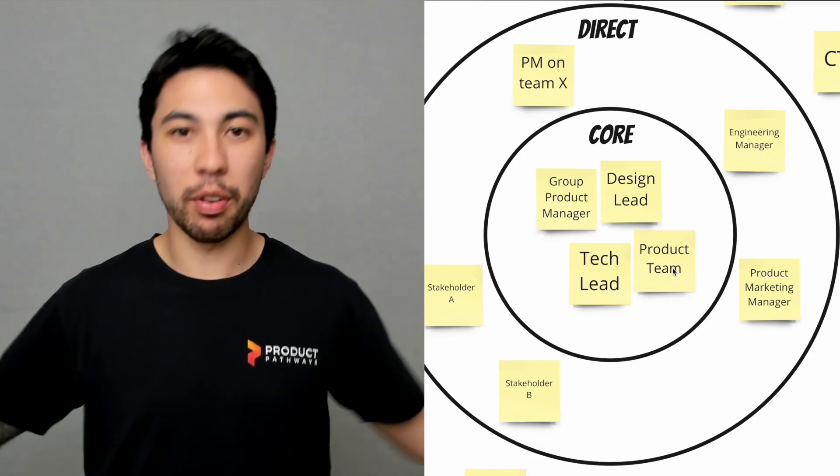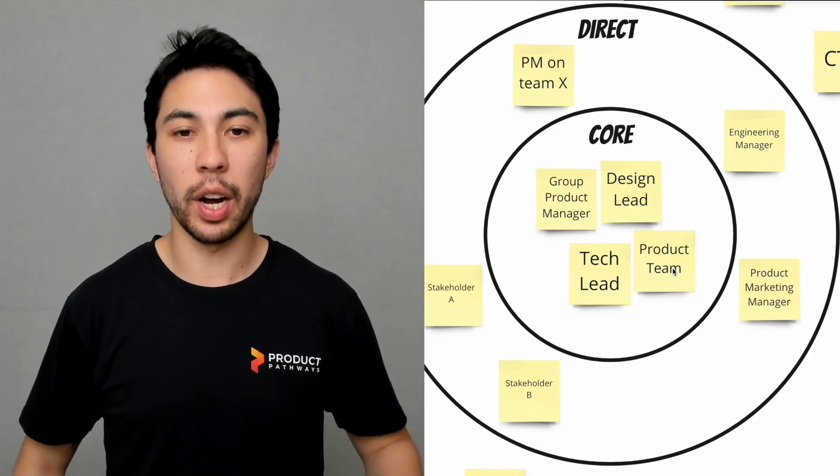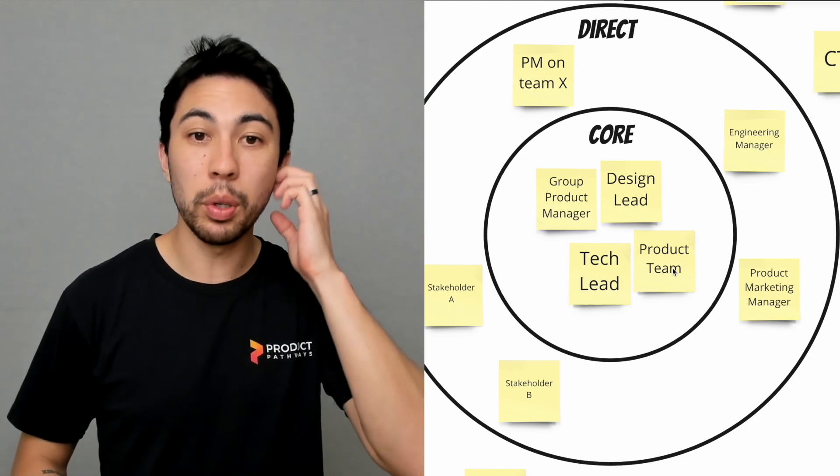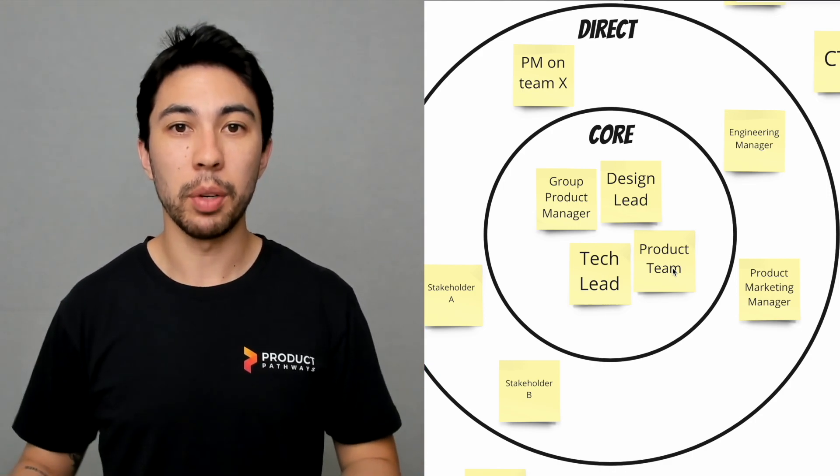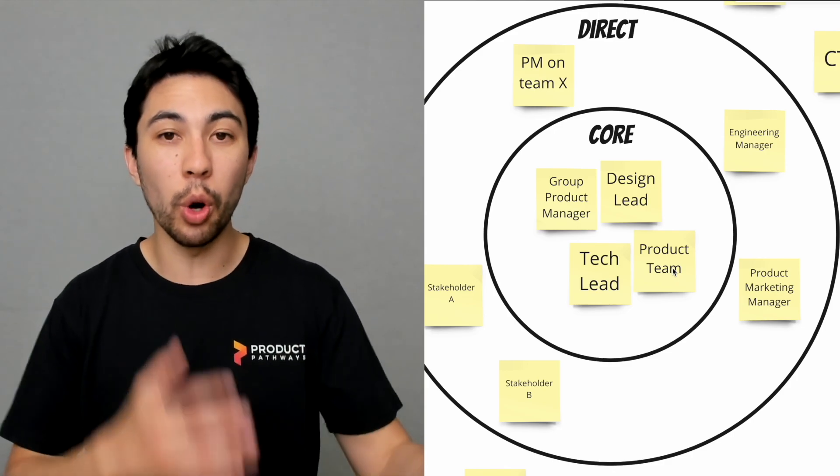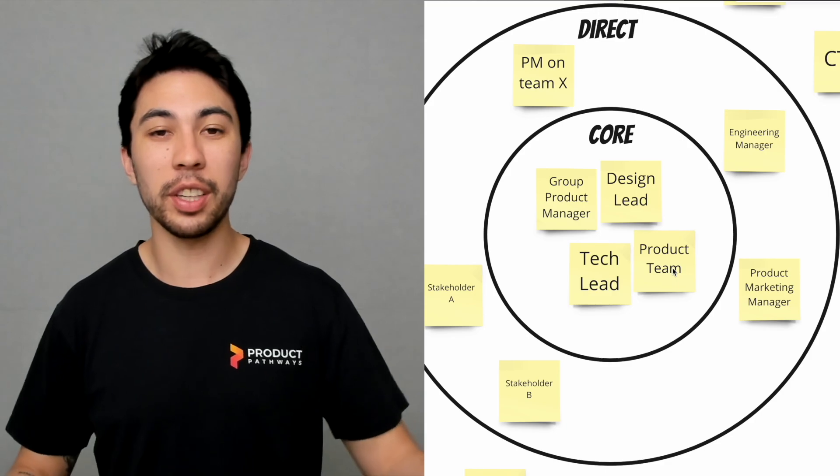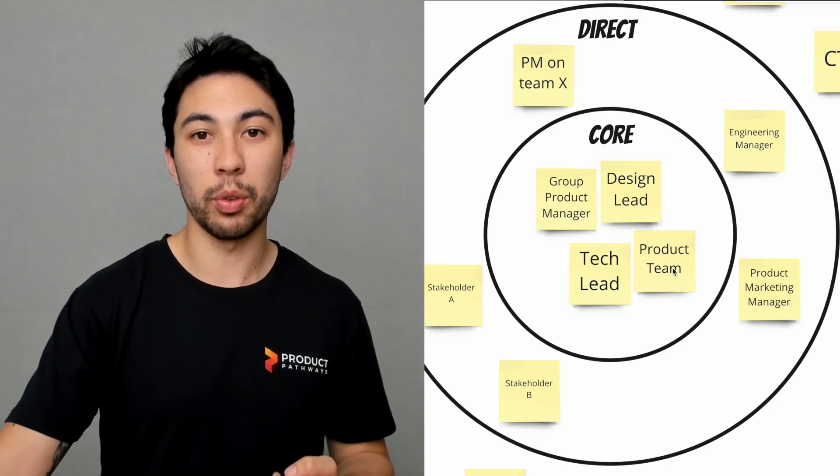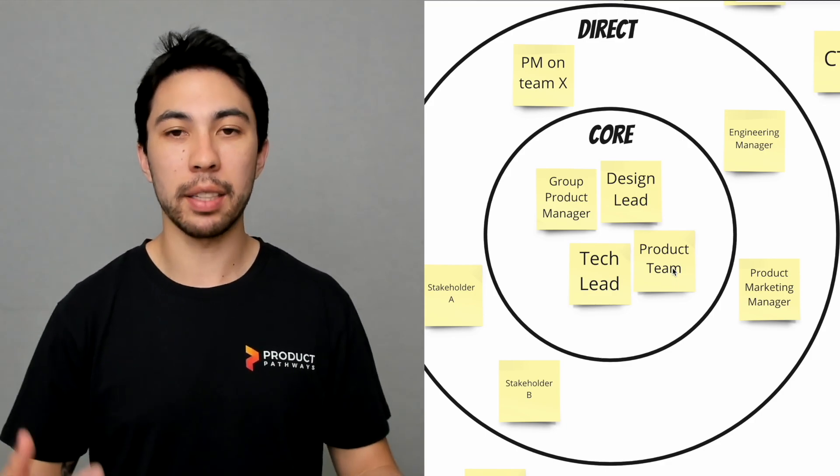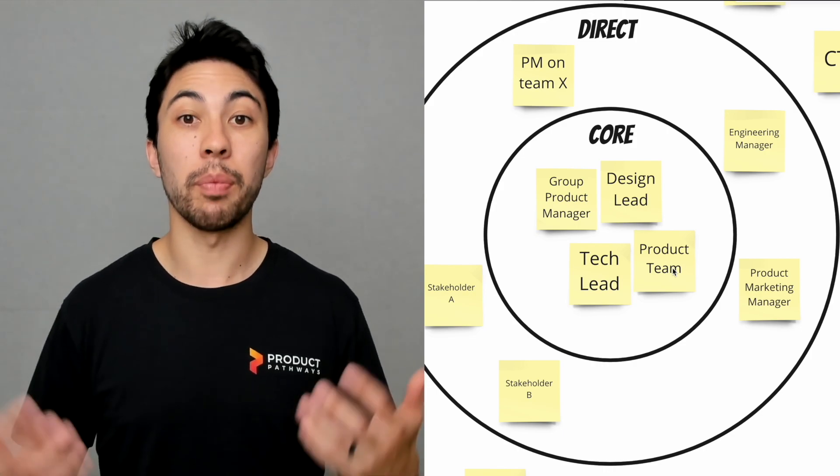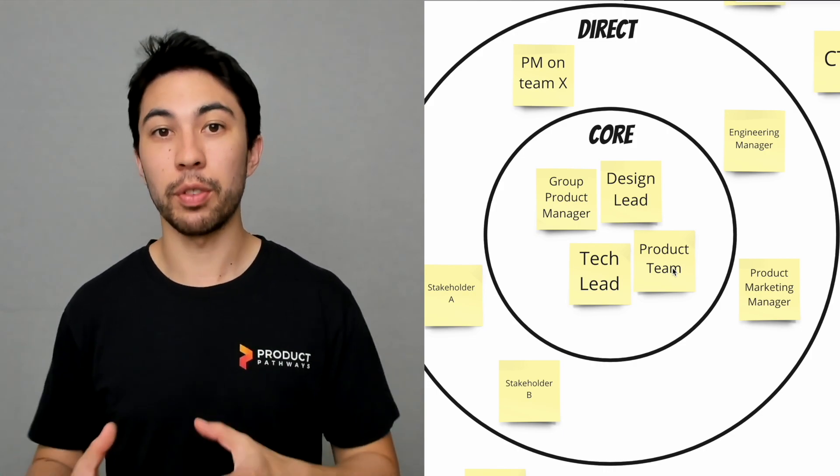You may even have in this example a product manager on another team. You might have a dependent team that you need to work with all the time, and in order for you to succeed they need to do something. So they would be someone who's direct because there's a direct impact and a direct relationship there.